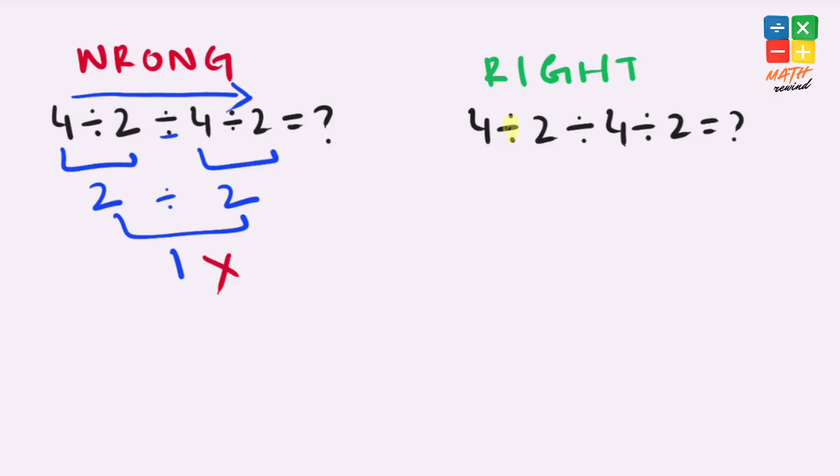If you notice in this expression, we have three division operators present. According to the rules, we must work from left to right, so we solve this part of the expression first.